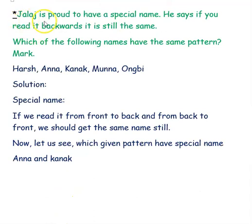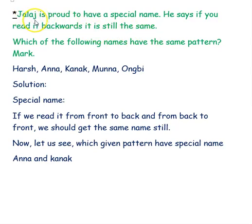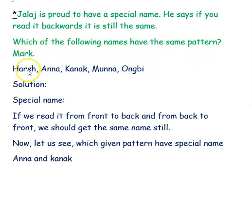Next example: Jalaj is proud to have a special name. He says if you read it backwards, it is still the same — J-A-L-A-J spelled forward and backward is the same. Now we have to find which of the following names have the same pattern, reading the same from front to back and back to front.